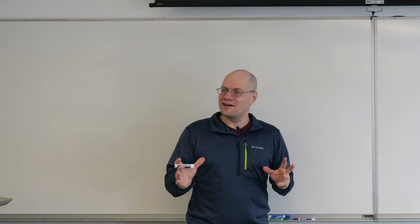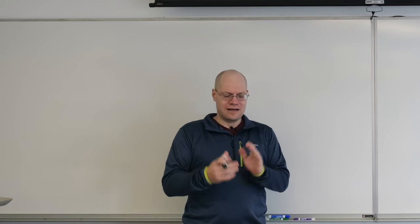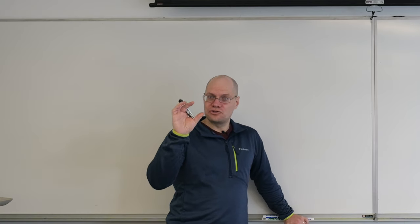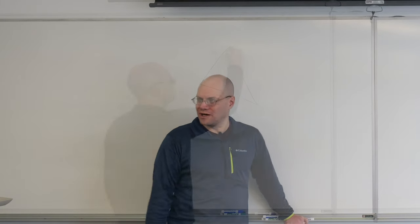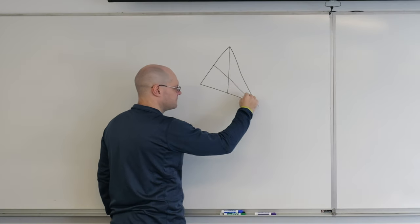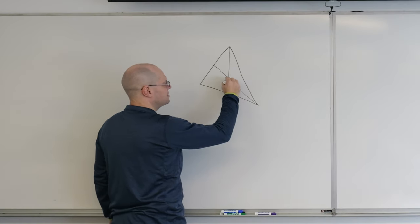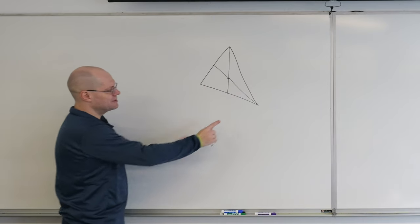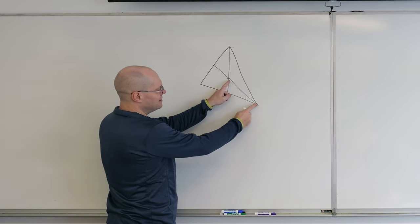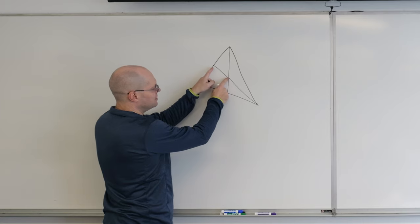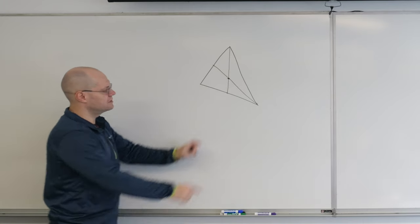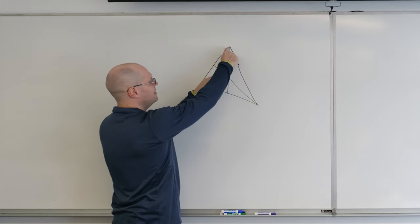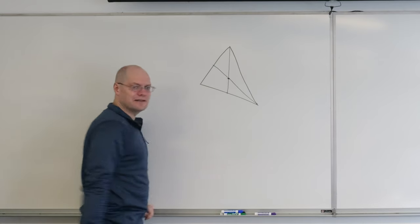So we'll start with the fact that two medians in a triangle, the point of intersection divides the median into two segments in proportion two to one. This is the point where they intersect, and the statement is that the ratio of the length of this segment to this one is two. This is two to one, and here it's the same thing, two to one.